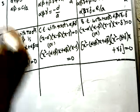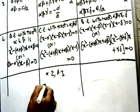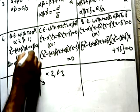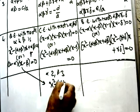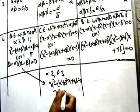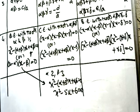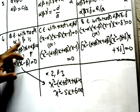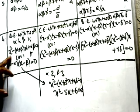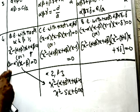Suppose we have the roots and want to find the equation. If we have two roots, for example 2 and 3 (calling them α and β), we use the formula: x² - (α + β)x + αβ = 0. That gives x² - (2+3)x + (2×3) = 0, i.e., x² - 5x + 6 = 0. Alternatively, we can use (x - α)(x - β) = 0.